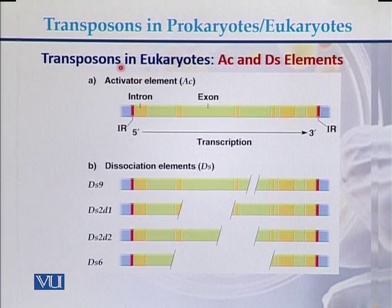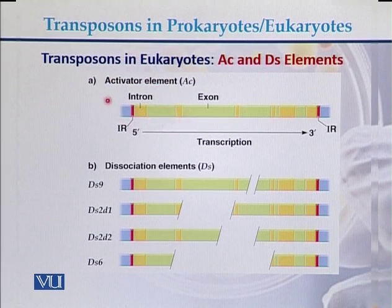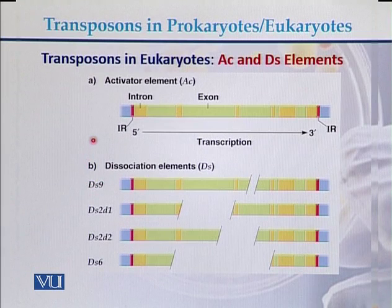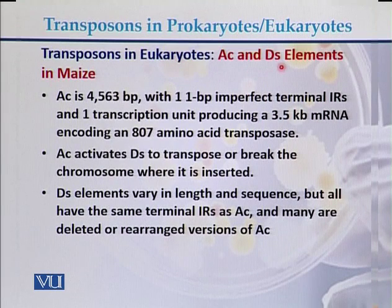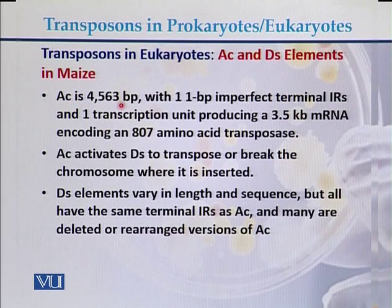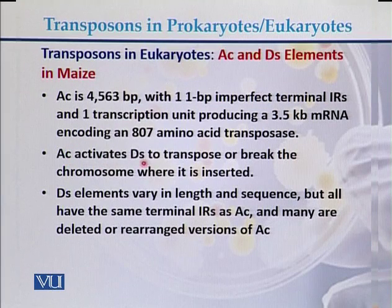This is the typical Ty element found in yeast. In higher eukaryotes, there are Activator (Ac) and Dissociation (Ds) elements. The diagram shows the Activator elements and Dissociation elements. These transposons are found in higher eukaryotes, such as maize. Activator elements can be up to 5,563 base pairs with 11 base pair imperfect terminal inverted repeat (IR) sequences.